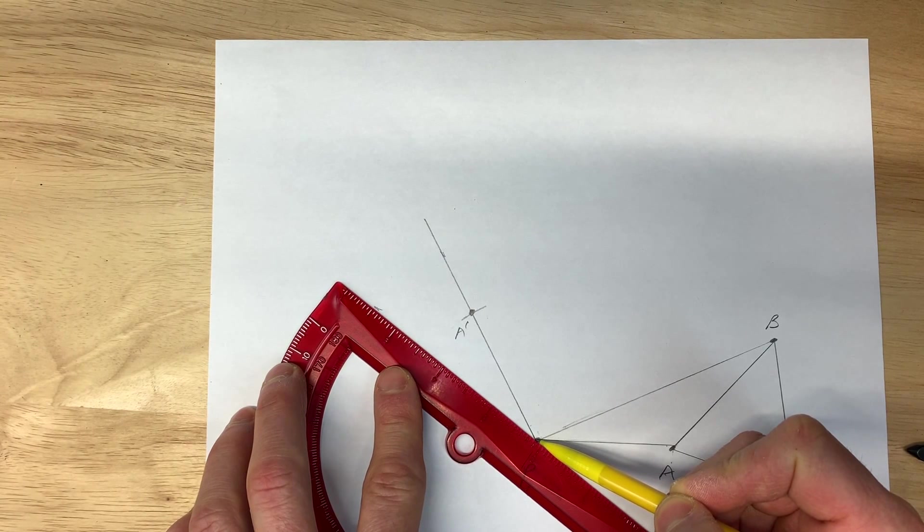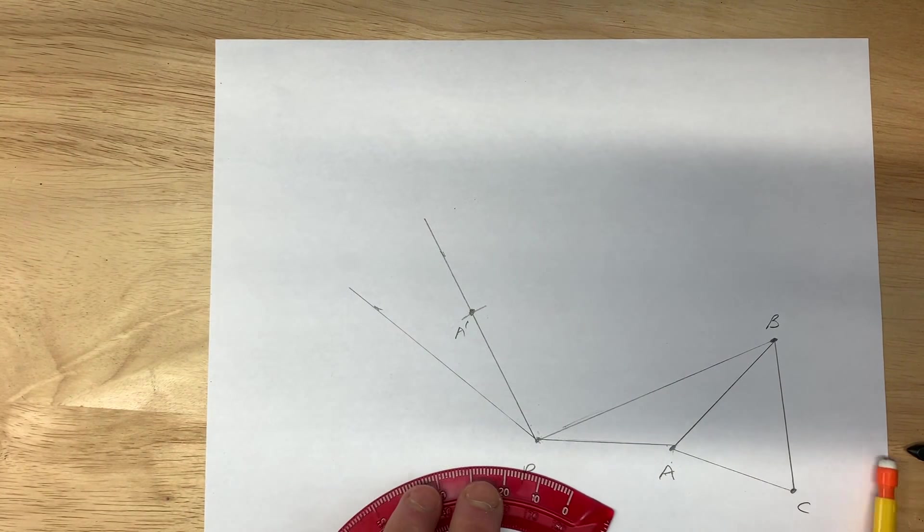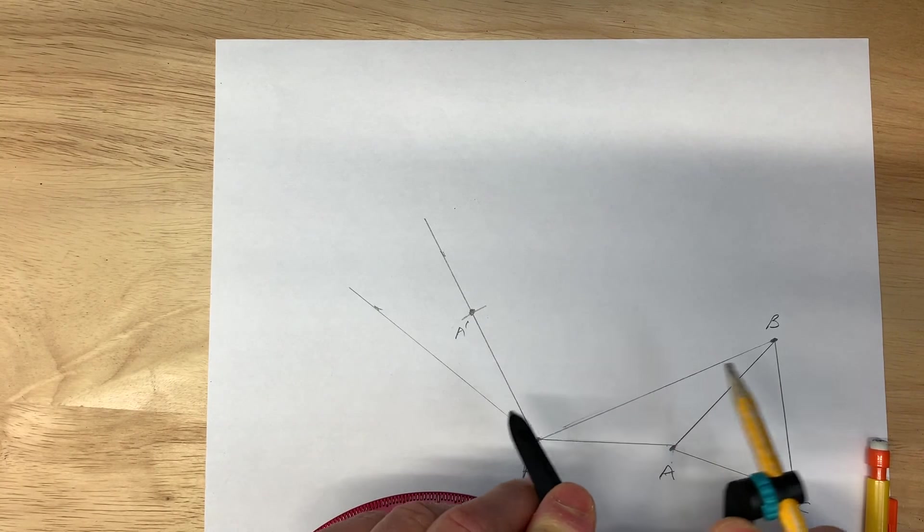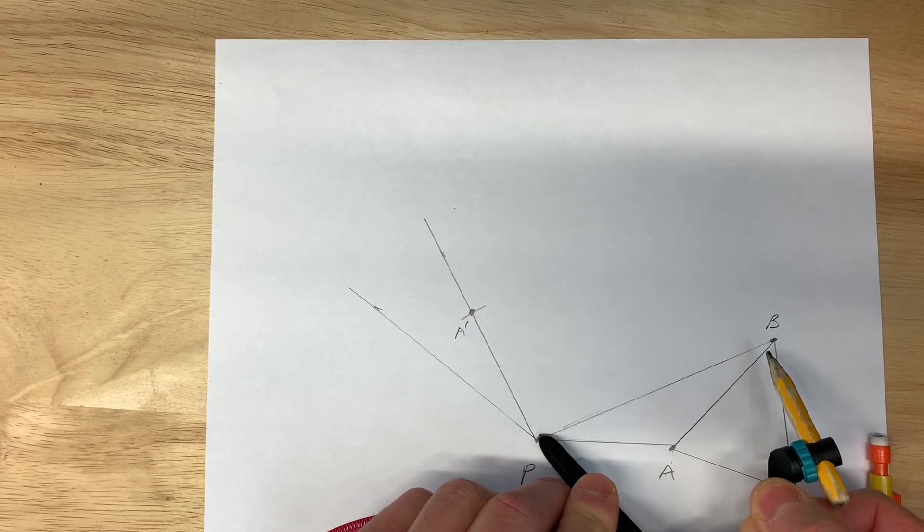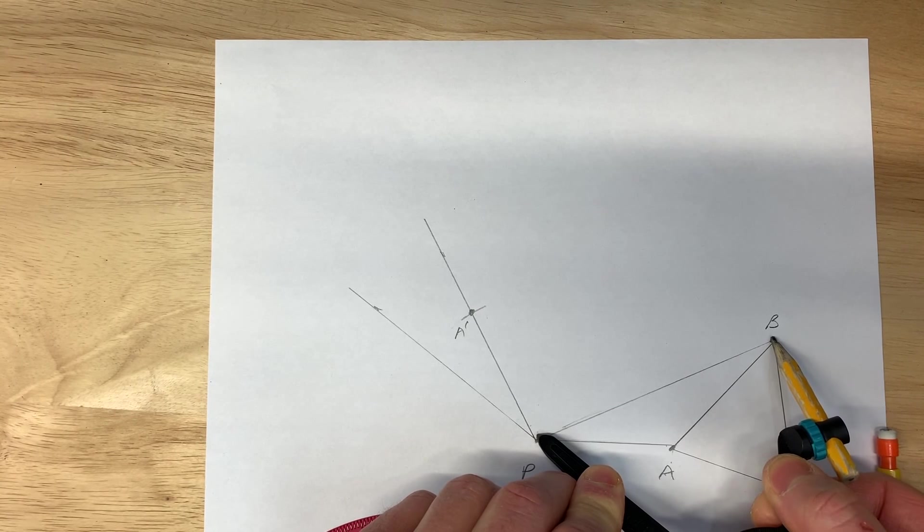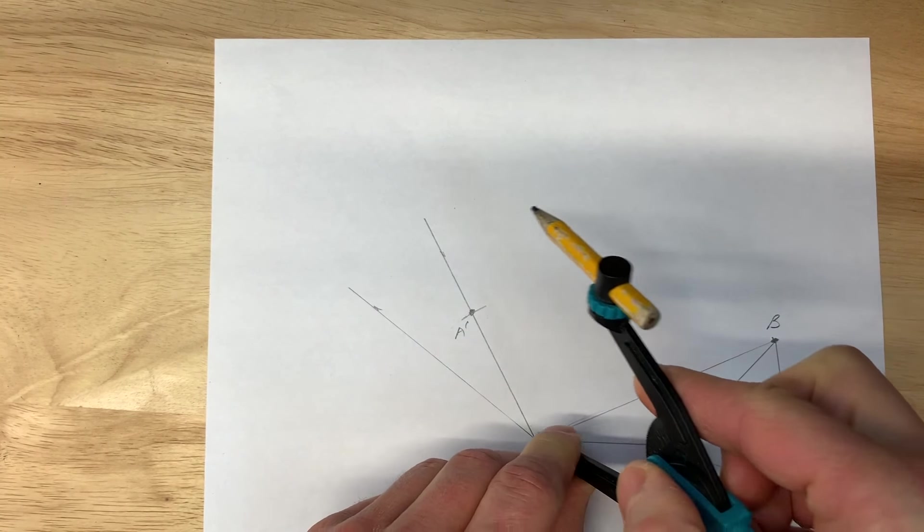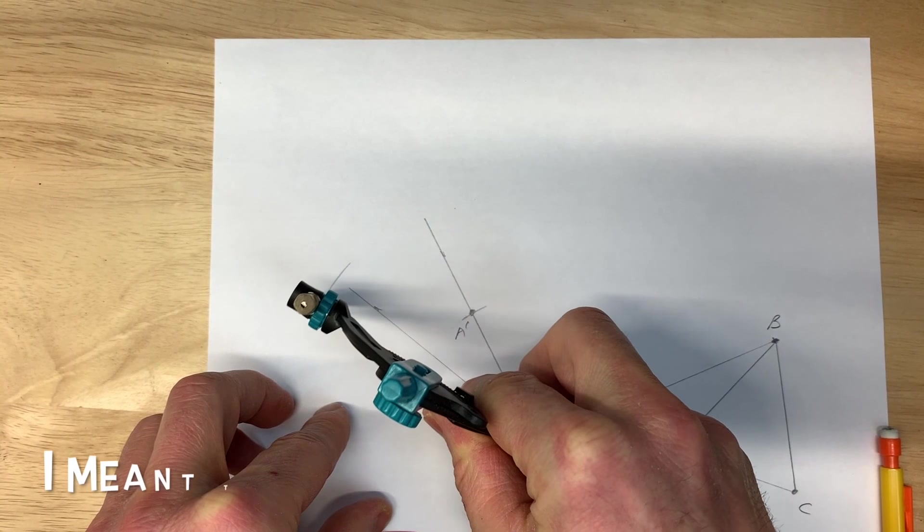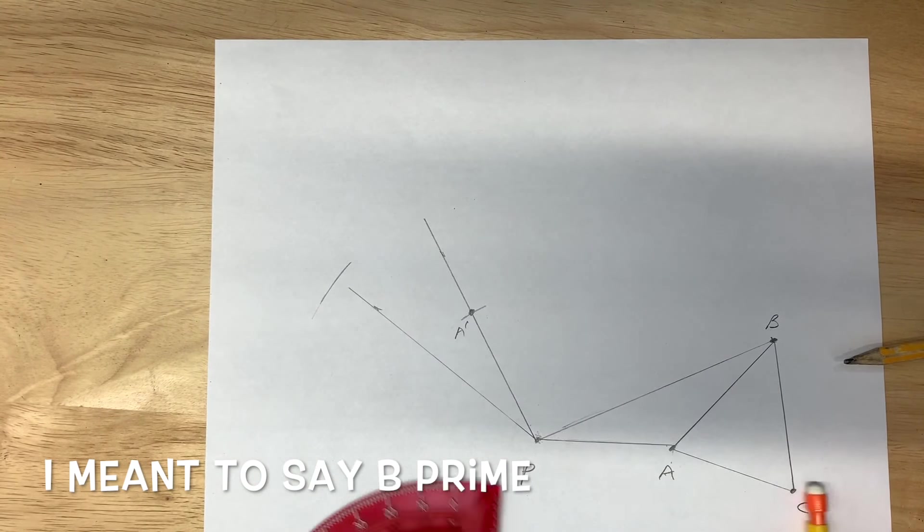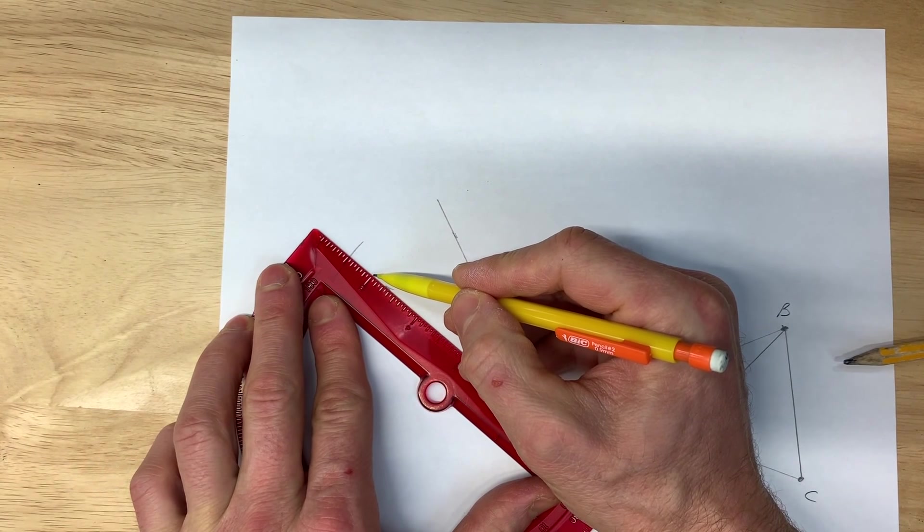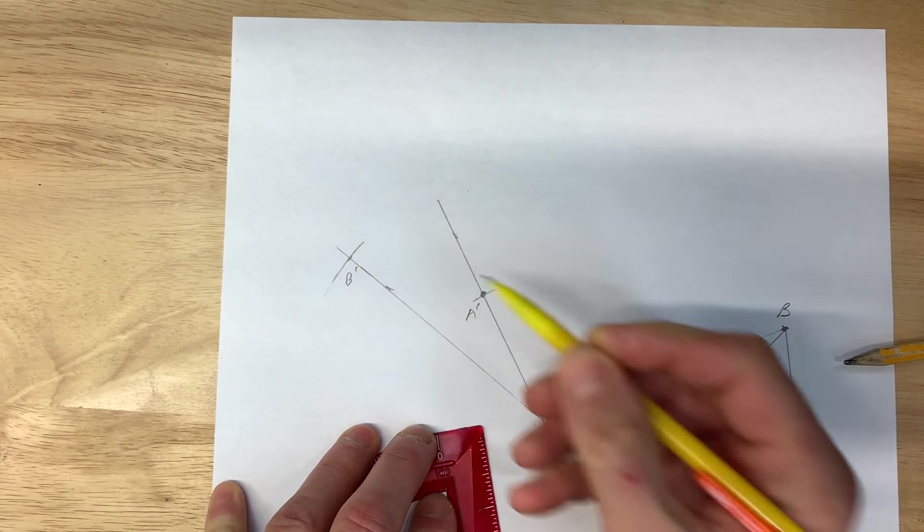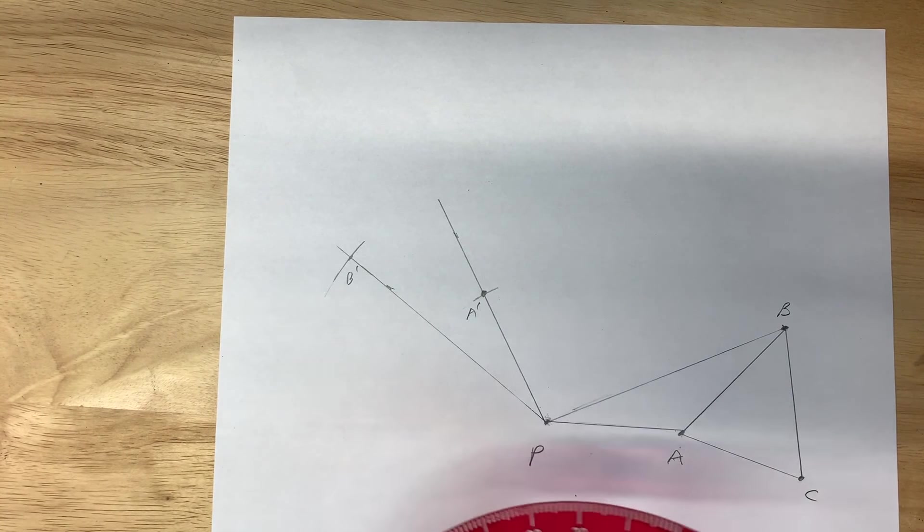Then we use our compass and we open it up in such a way that the distance from point P to B is going to be the same as from P to B prime. Now I didn't make my line long enough, so let me extend it a little bit. You can see they're crossing right there - that's B prime. We want to do the same thing with point C.